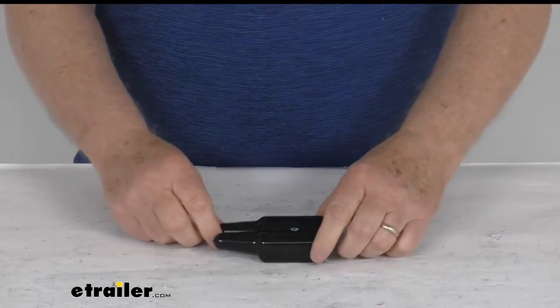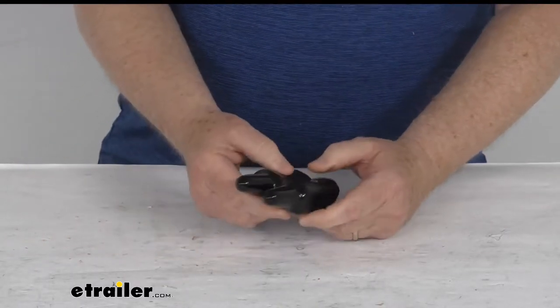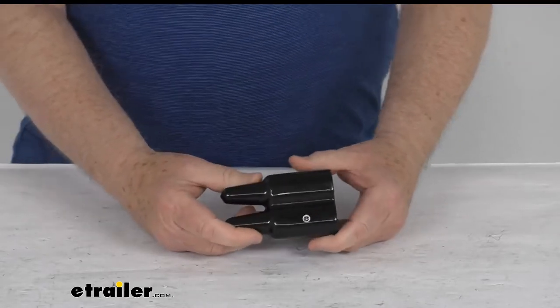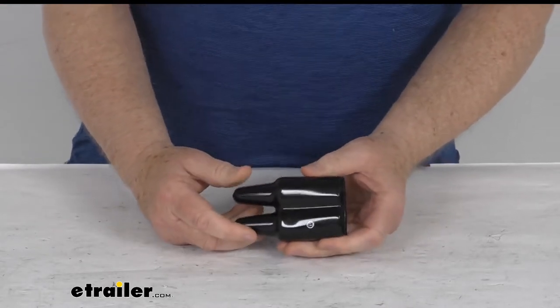Hello everybody, this is Jeff at eTrailer.com. Today I'm going to take a look at this Bulldog wind sealing cover for the 175 amp quick connectors.